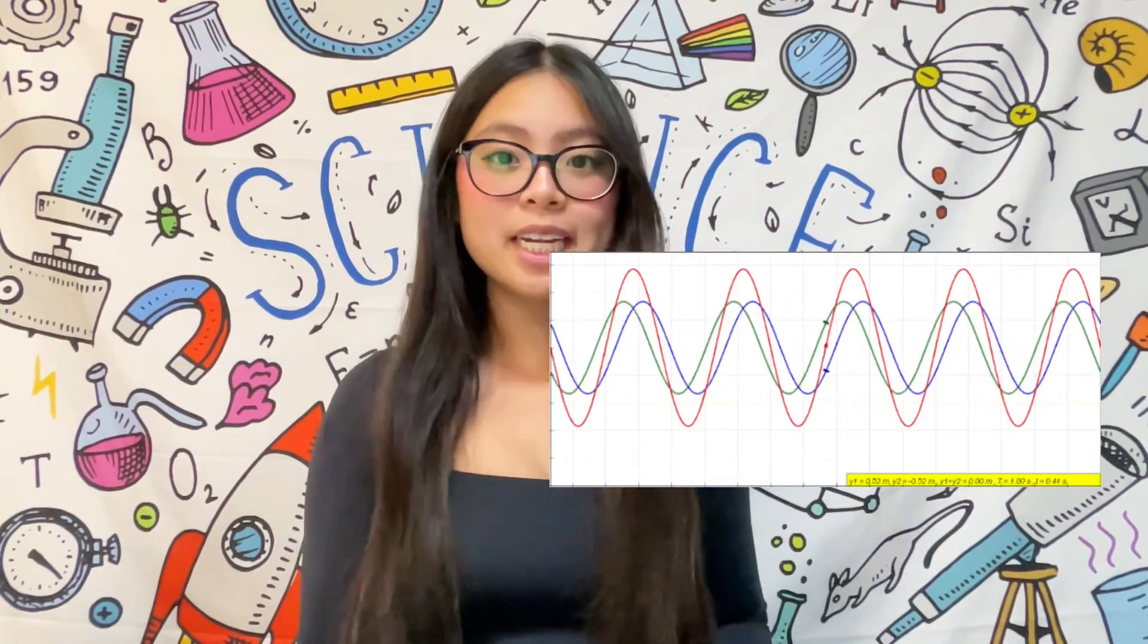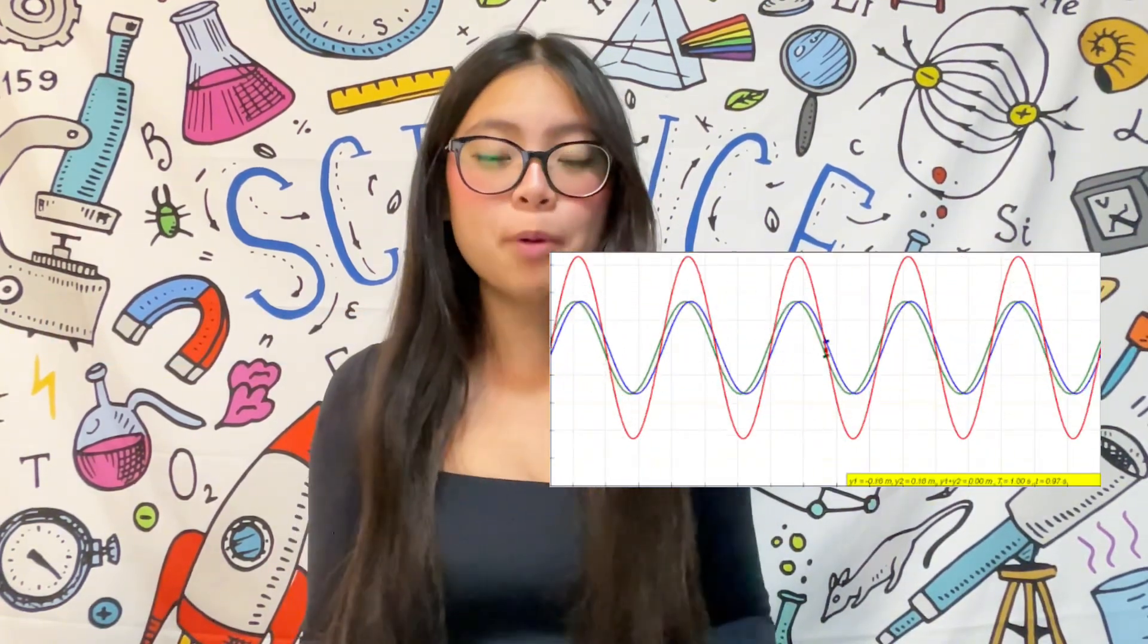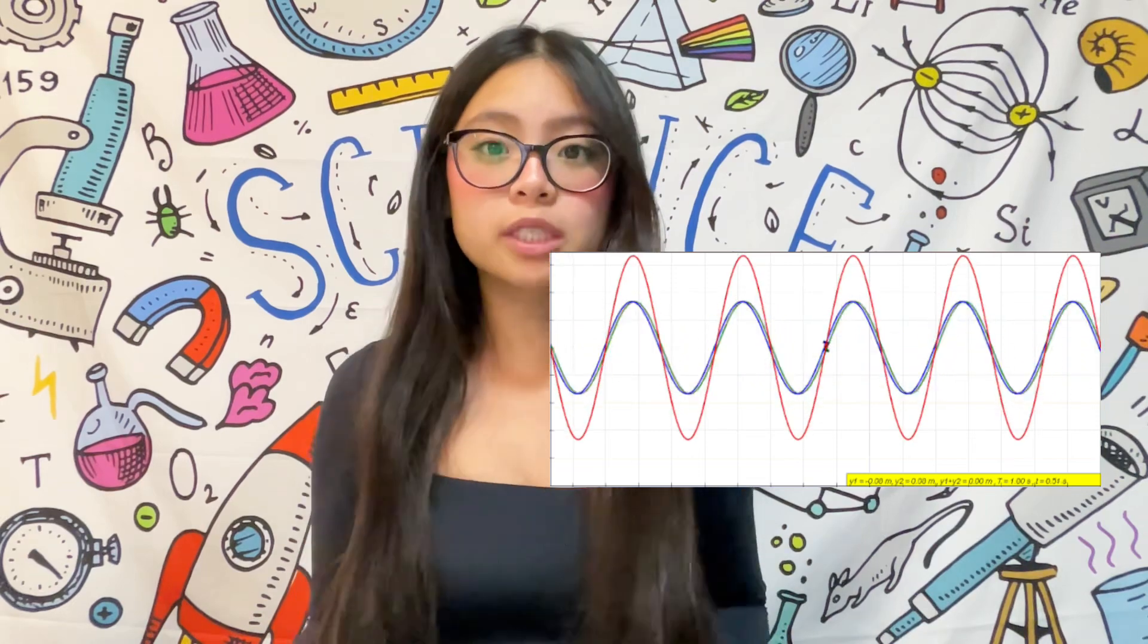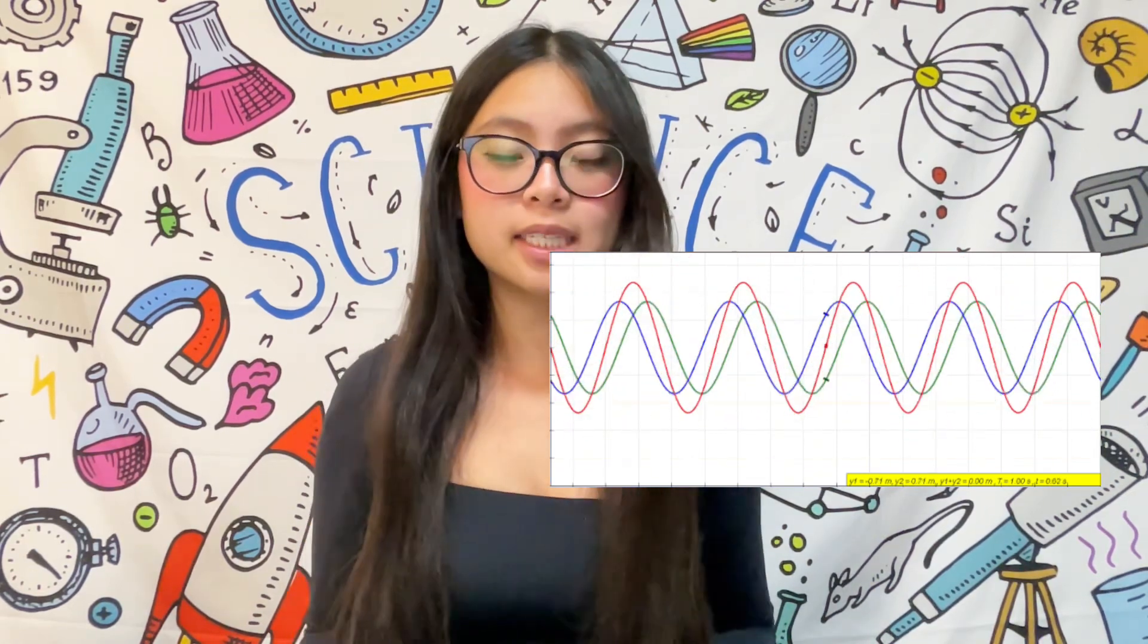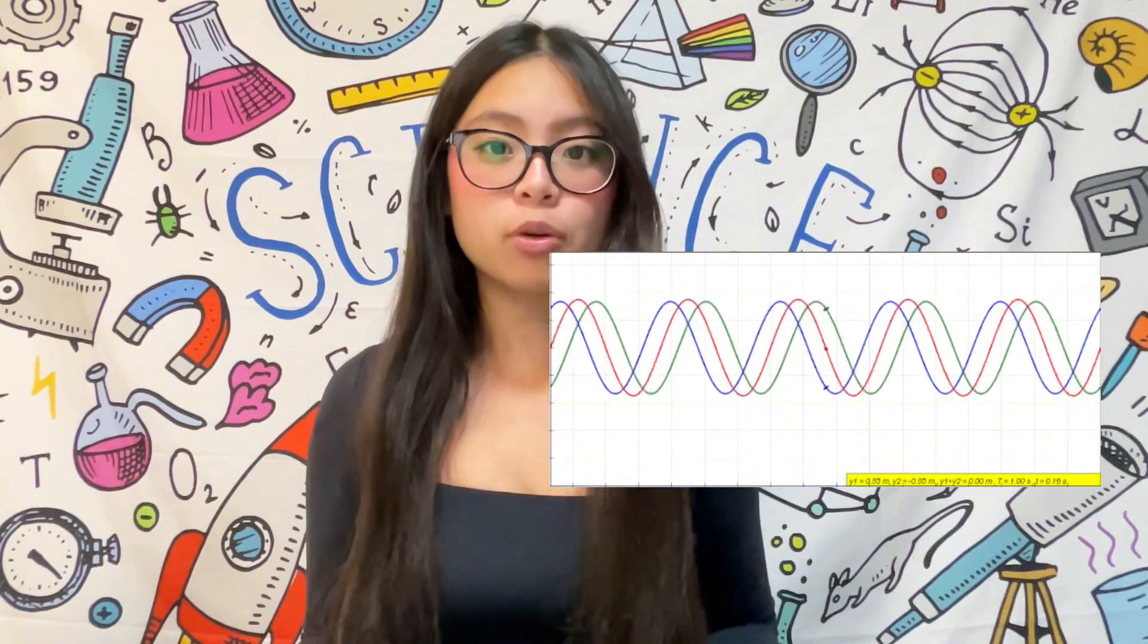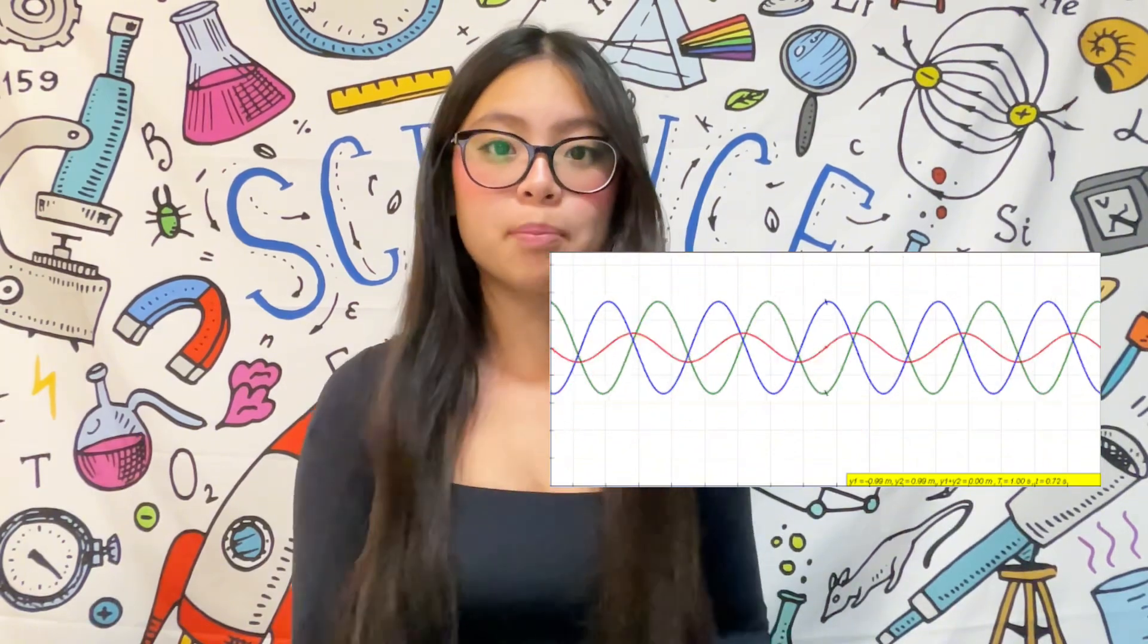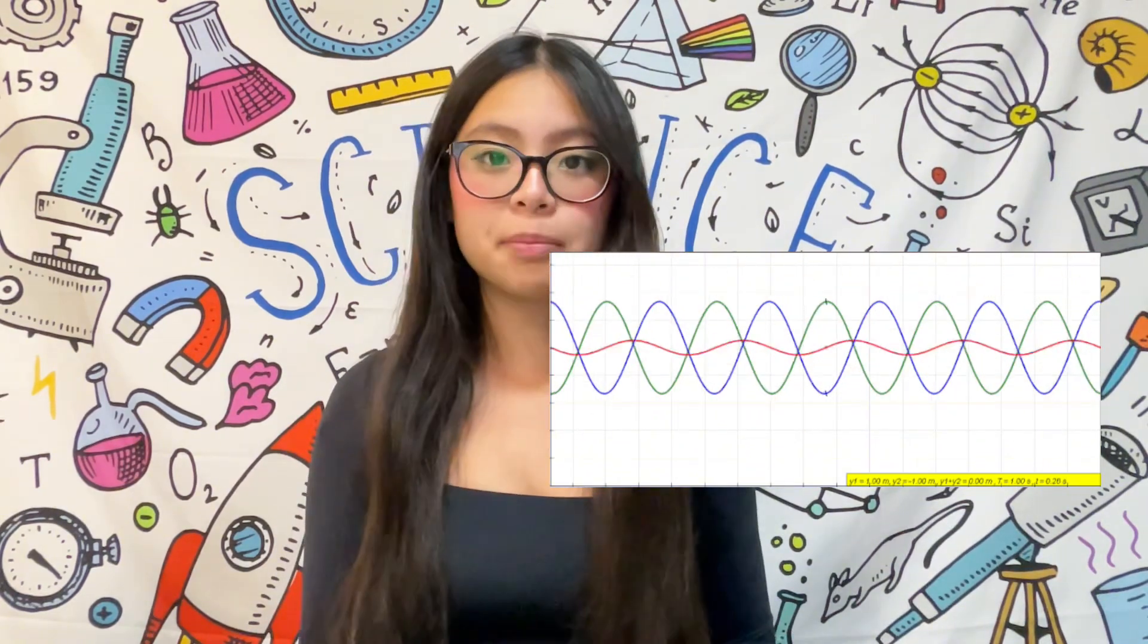This is known as a standing wave because after the two component waves interfere, the resultant wave they produce has points on it that appear to be standing still, while other points on the wave appear to be changing from positive amplitude to negative amplitude.